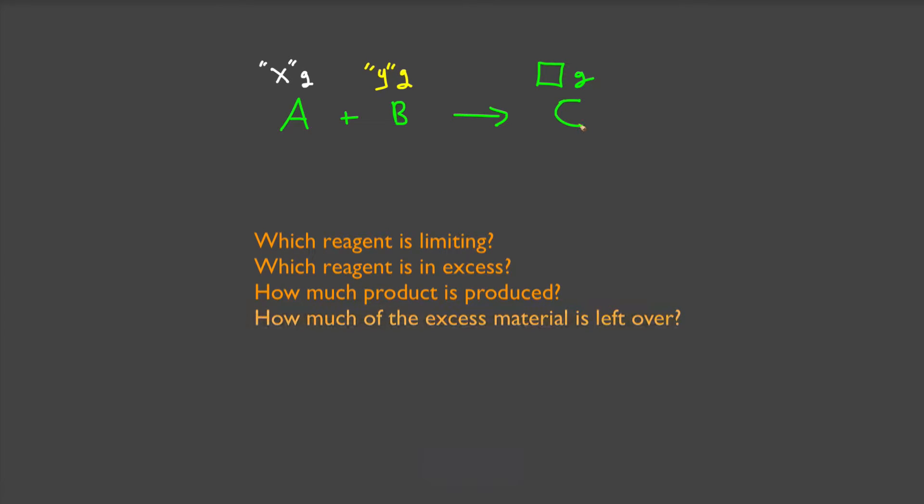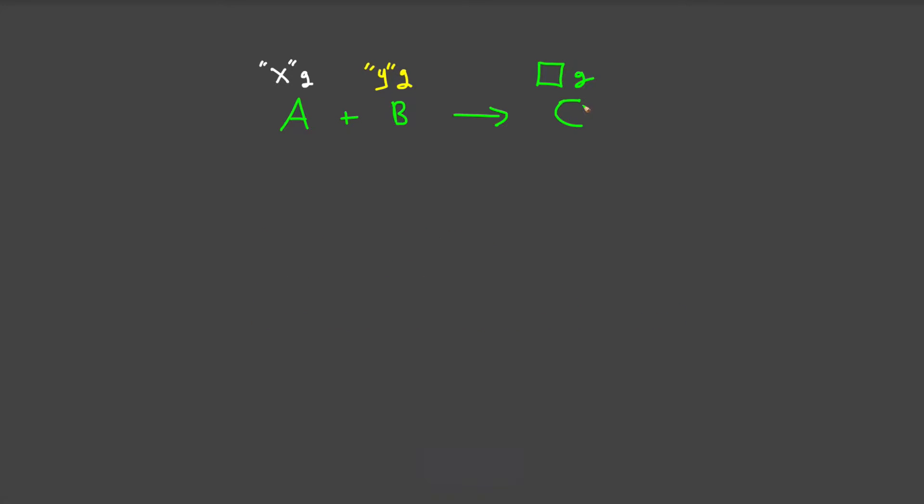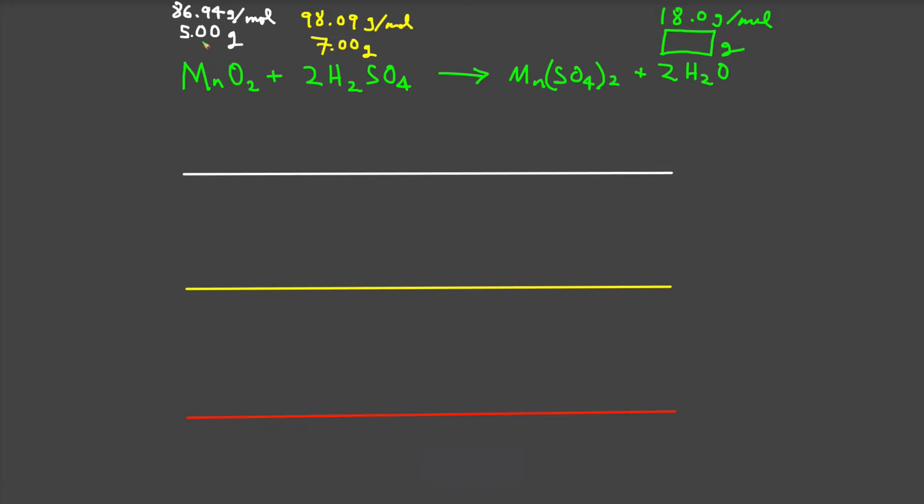So let's take up the last question with a specific example. Starting with five grams of manganese dioxide and seven grams of H2SO4. One, how much material is produced? Two, which material is limiting? Three, which material is in excess? And four, of the material that's in excess, how much of it is left over?